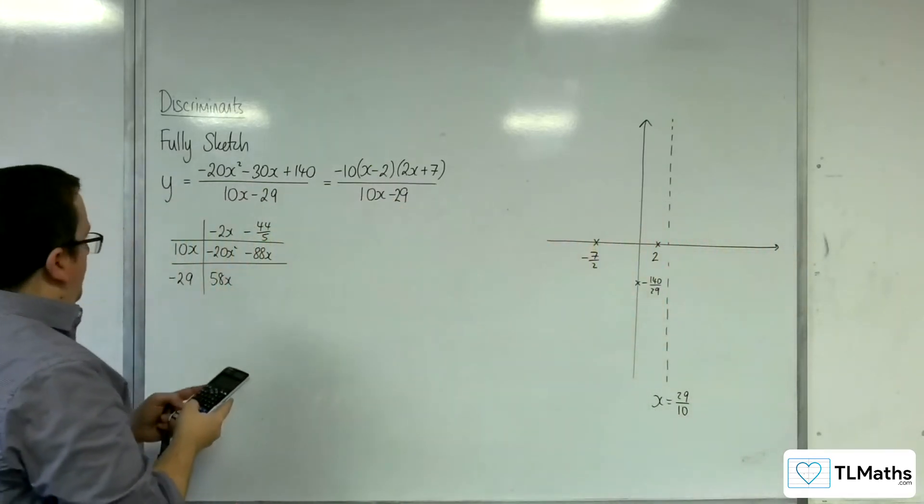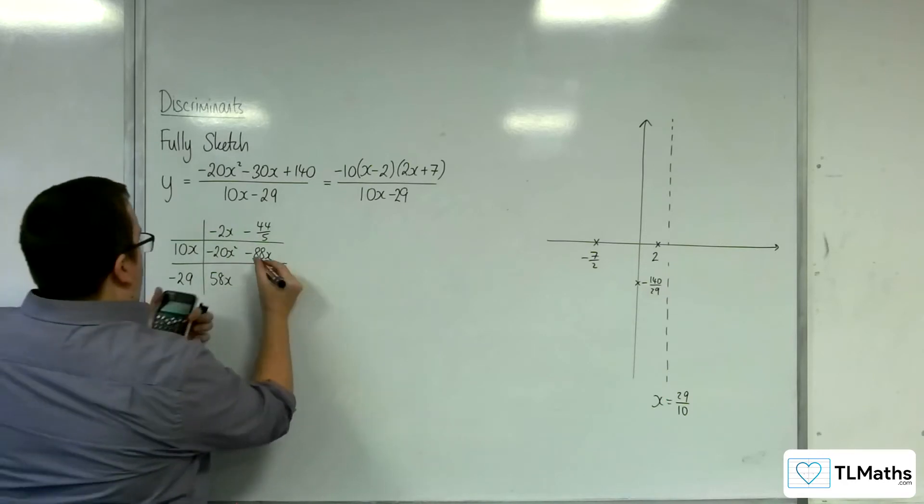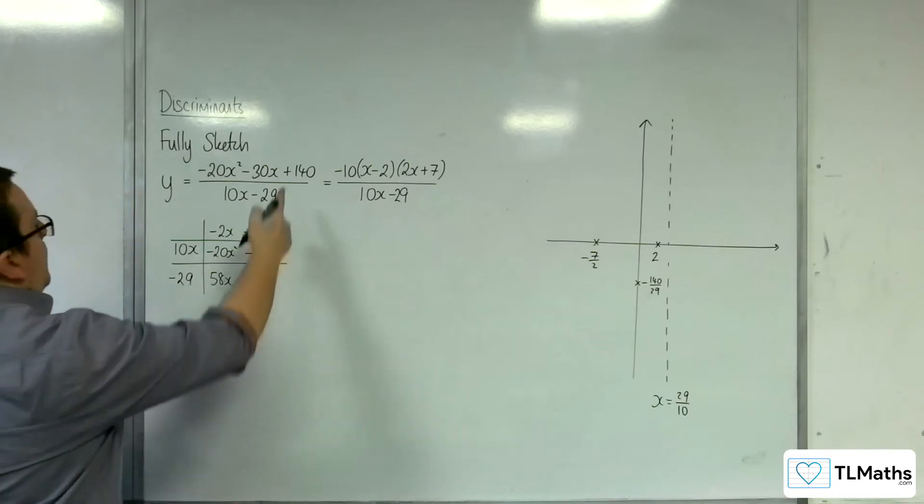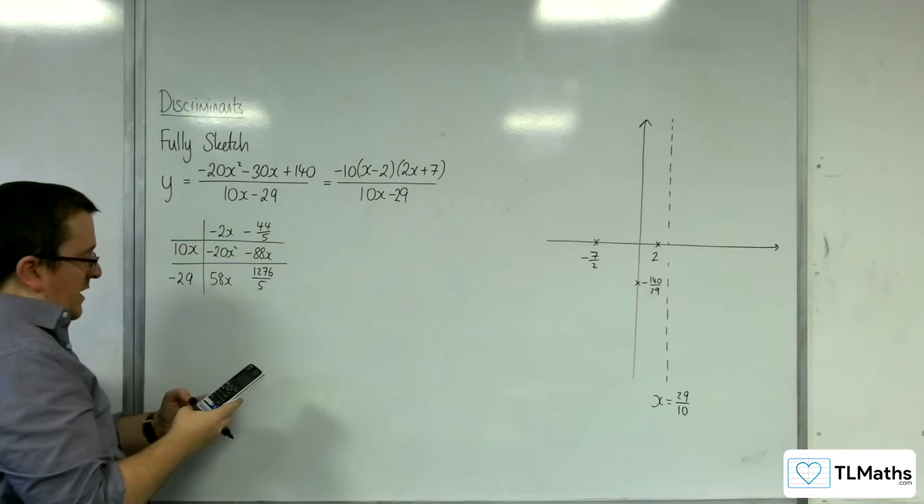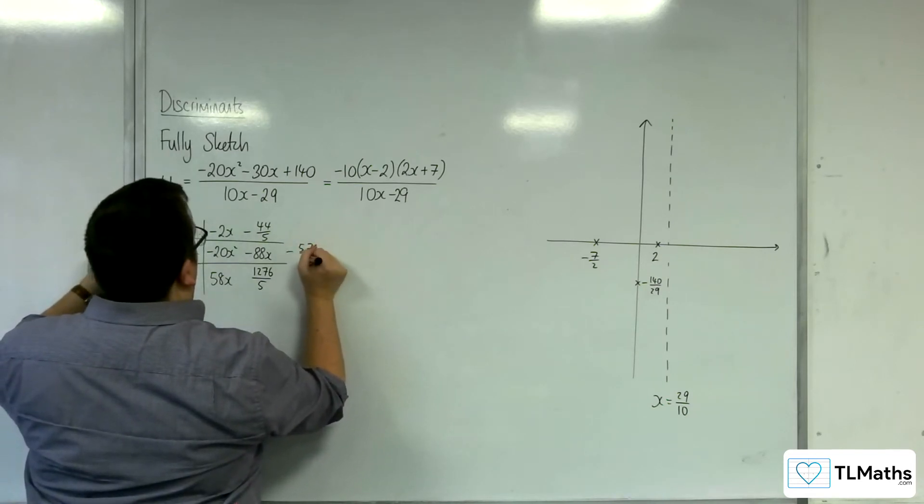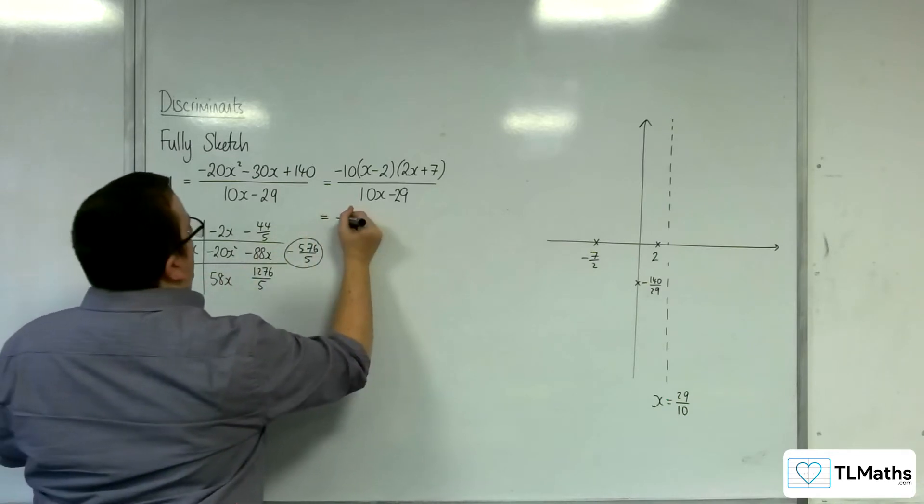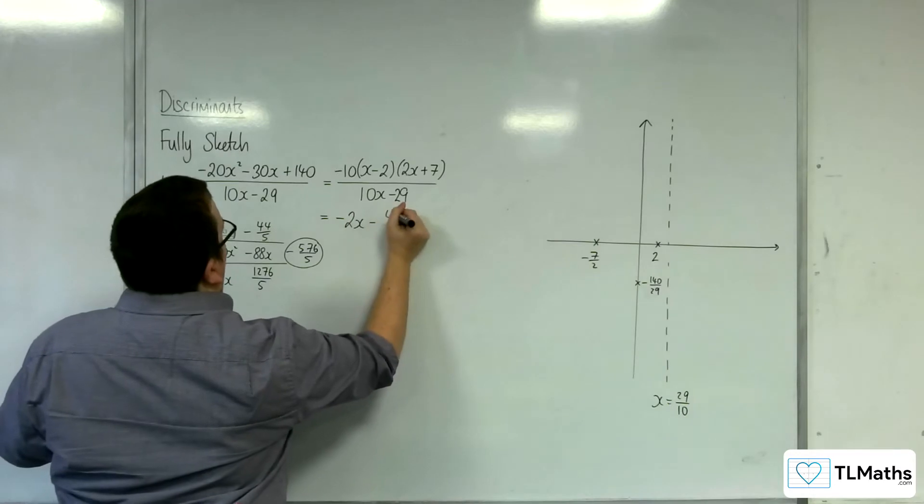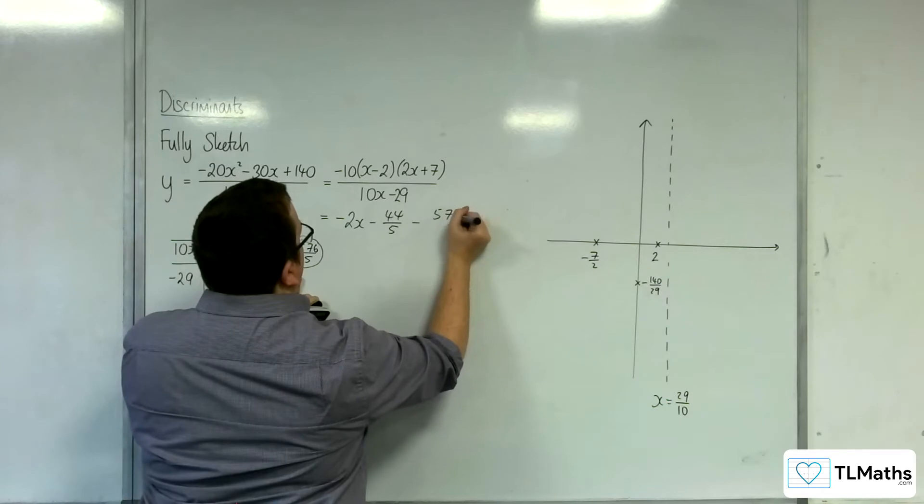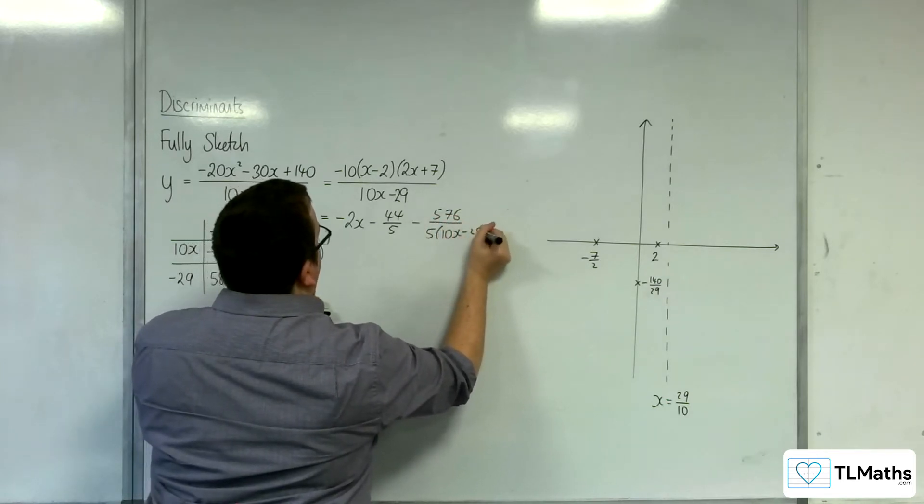Then, we've got 44 over 5 times by 29. So, that's going to be 1, 2, 7, 6 over 5. Now, we need 140. So, 140 take away that, and that will be minus 576 over 5. And so, that will be my remainder. This is equal to minus 2x, take away 44 over 5, take away 576 over 5 lots of 10x, take away 29.